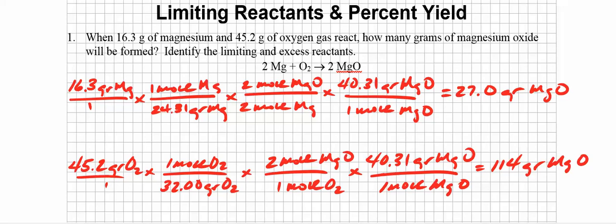Alright, let's go ahead and get started. I want to welcome you to this worksheet. This is limiting reactants and percent yield. We're going to divide this one up into three parts. That will give us a chance to slow down and make sure that we understand everything about these concepts. So here we go.